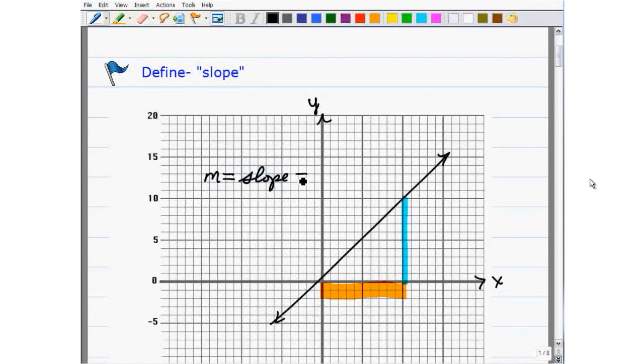And what we're doing is we're comparing two components of this line. You can think of this triangle as part of this line. And we call this part the height, if you will, the rise. And we call this component the run.